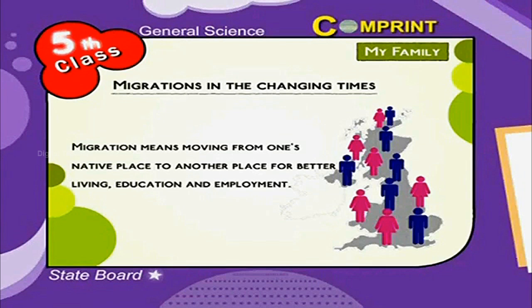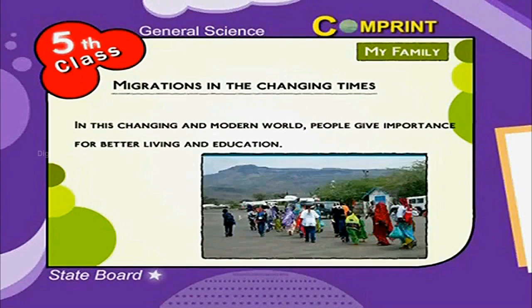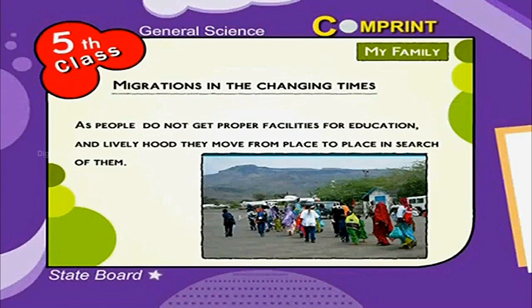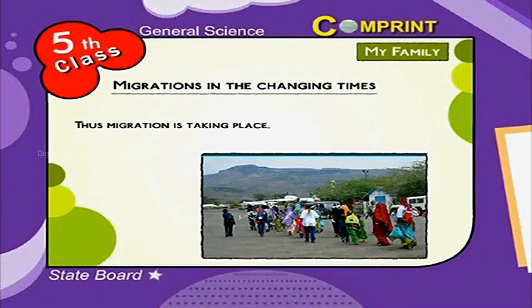In this changing and modern world, people give importance to better living and education. As people don't get proper facilities for education and livelihood, they move from place to place in search of them. Thus, migration is taking place.